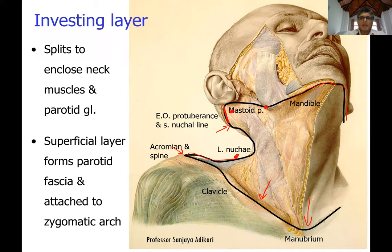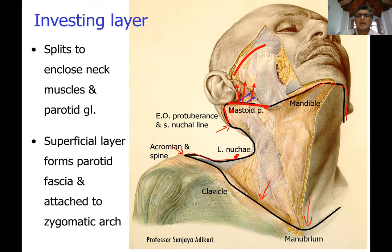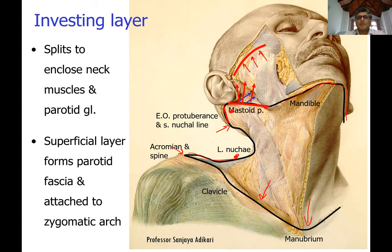At the gap between the mastoid process and the angle of the mandible, the investing layer splits into two layers — a superficial layer and a deep layer — which enclose the parotid gland. The superficial layer forms the parotid fascia and attaches to the inferior border of the zygomatic arch. The deep layer forms the stylomandibular ligament, running from the styloid process to the angle of the mandible.